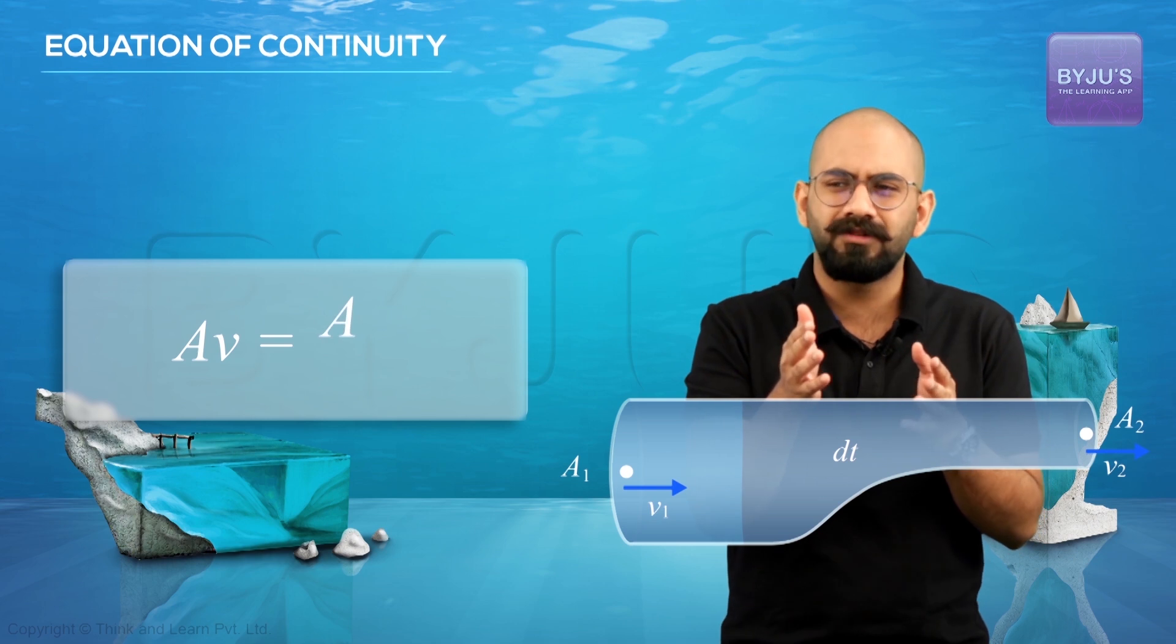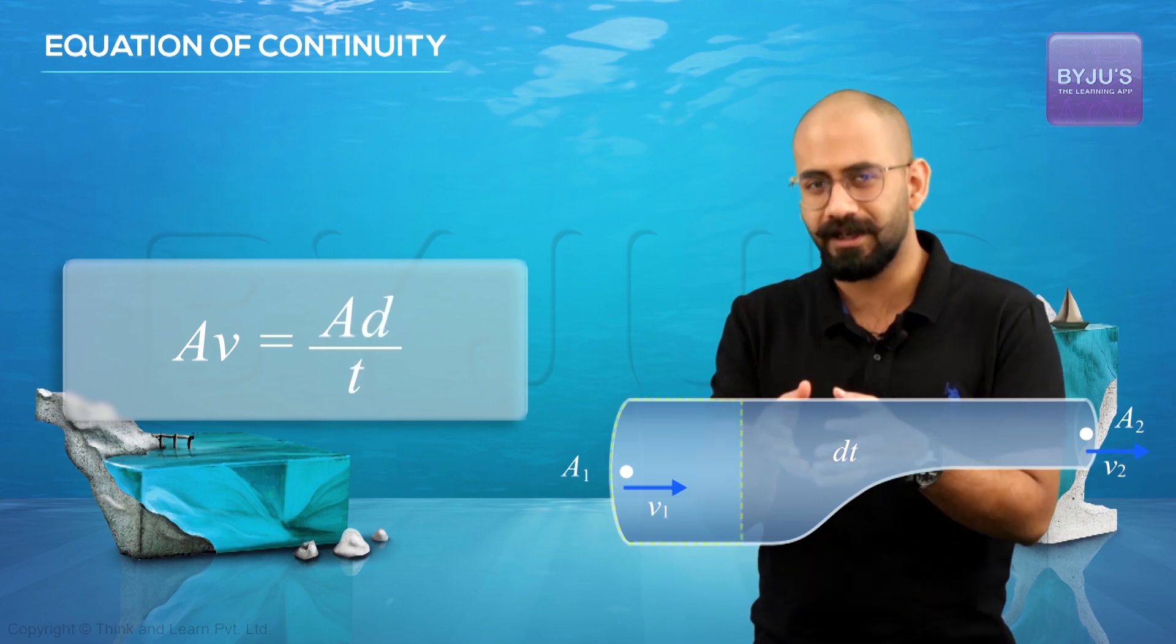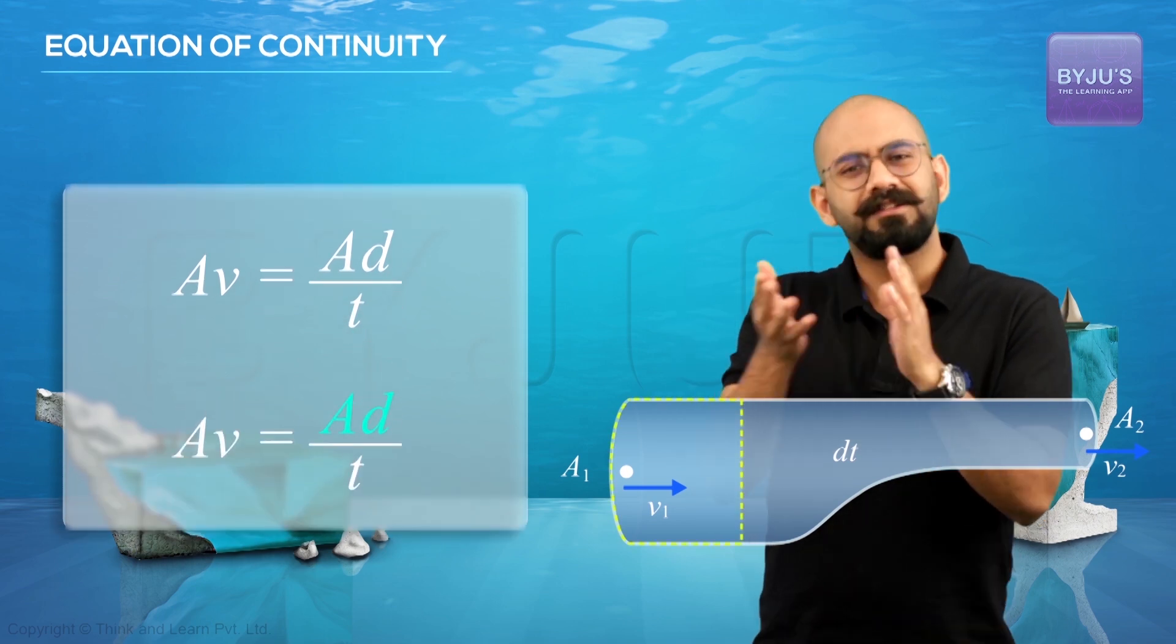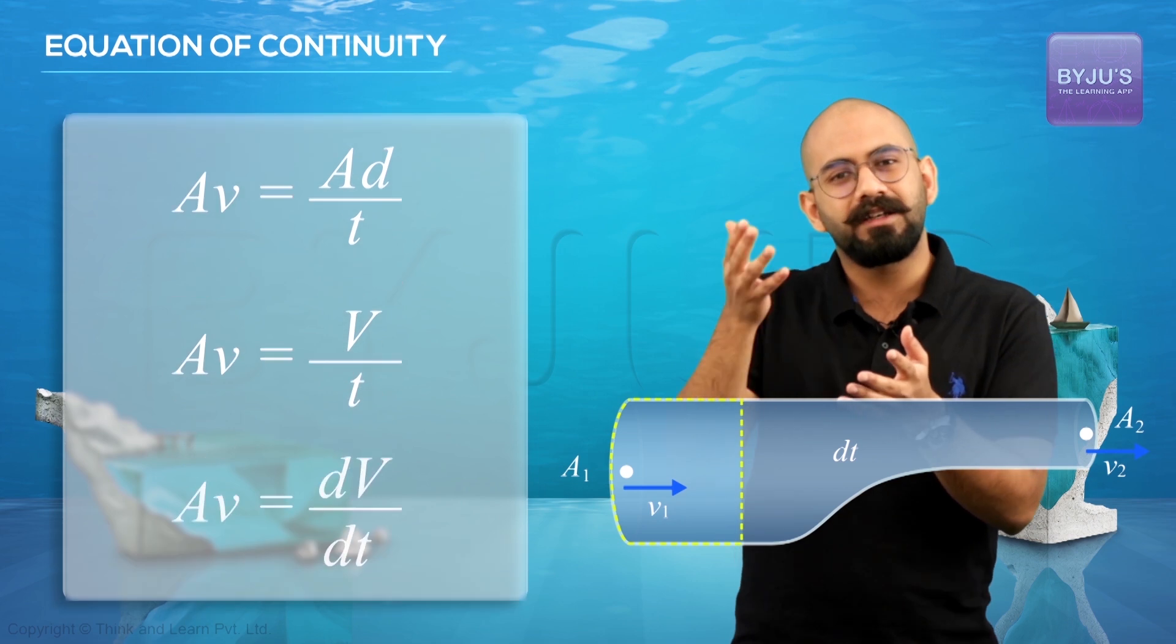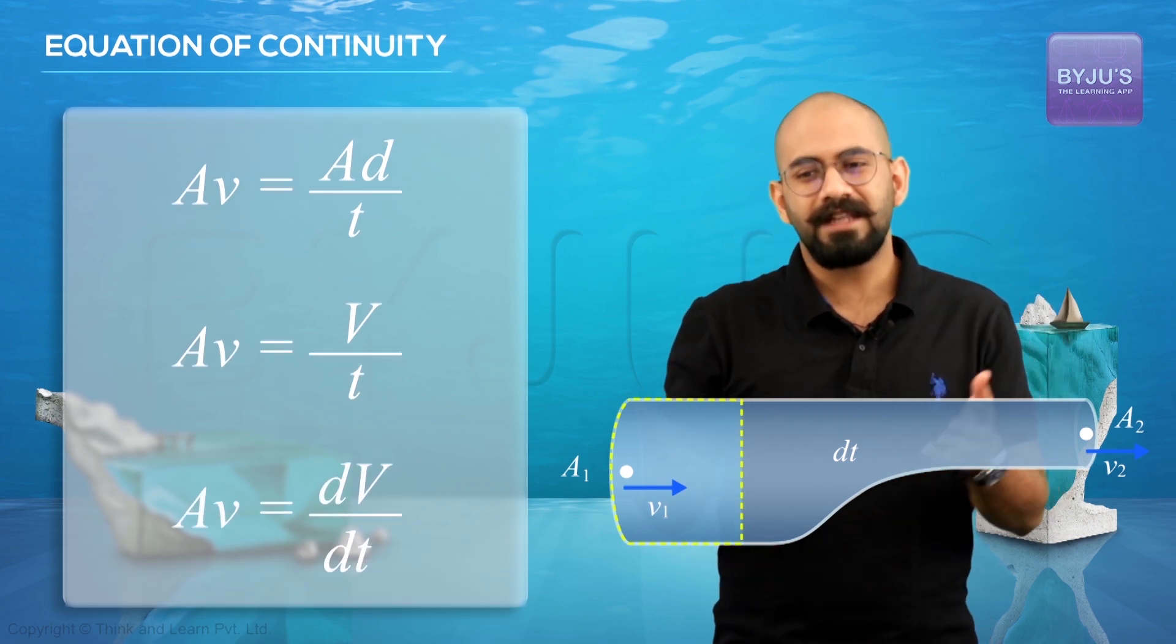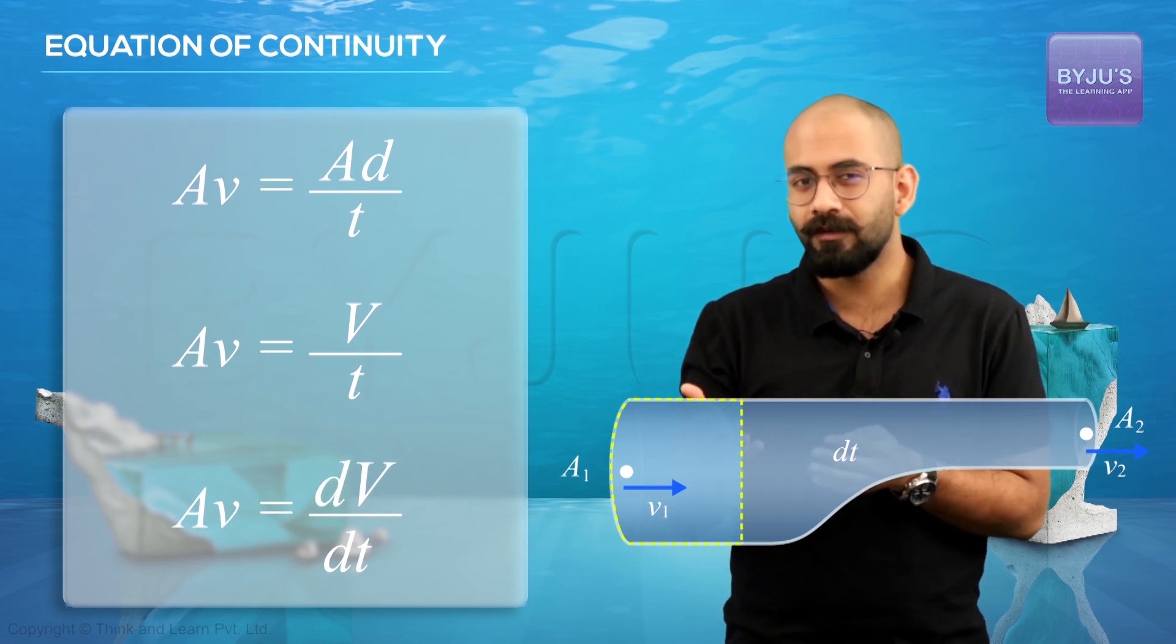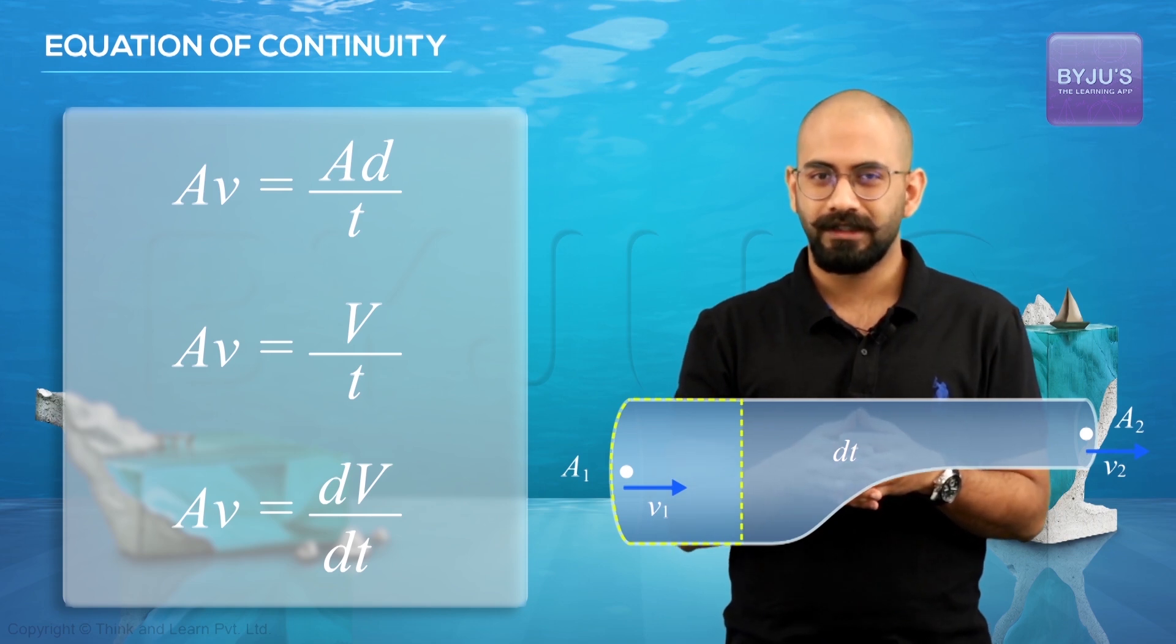And this product A V is equal to what? It is basically equal to the area into, so if you consider this section, it's area into distance travelled by time taken. Now area into that distance is nothing but the volume. So A V is nothing but the change in volume by time taken, dV or d capital V by dt, where capital V is basically the volume. So this basically means that the product of the area of cross section and the speed at a point is also equal to the change in volume by time taken.